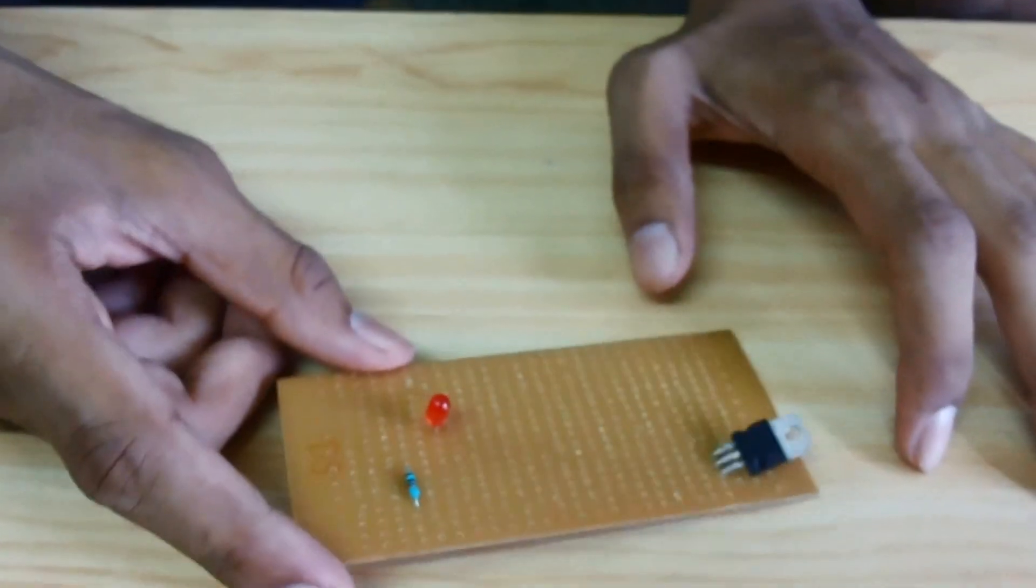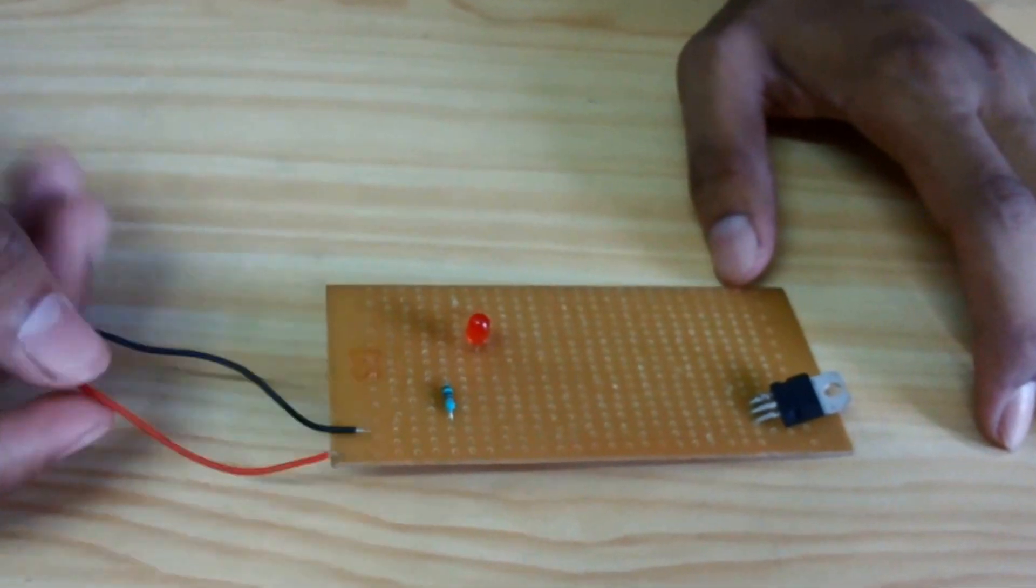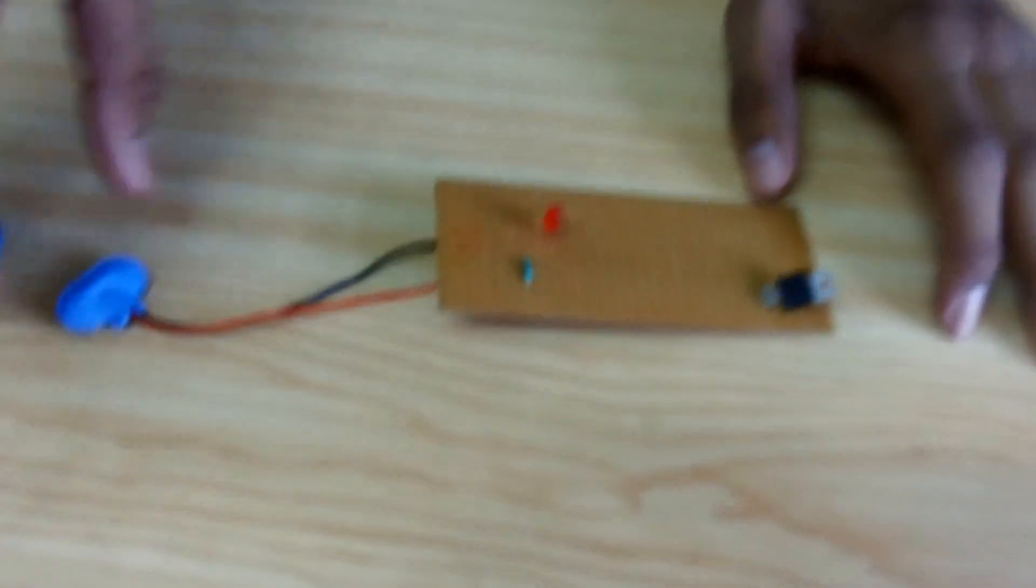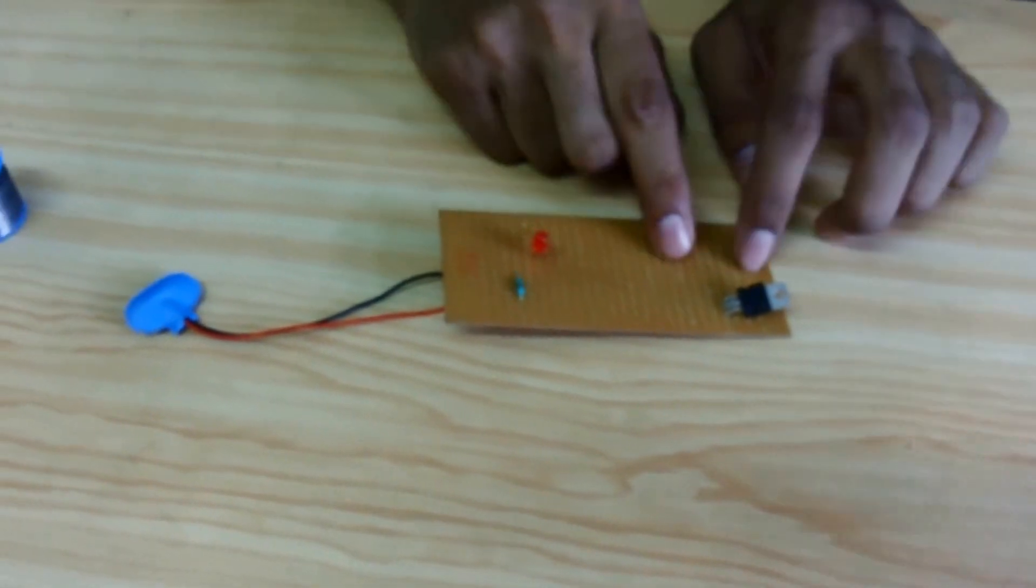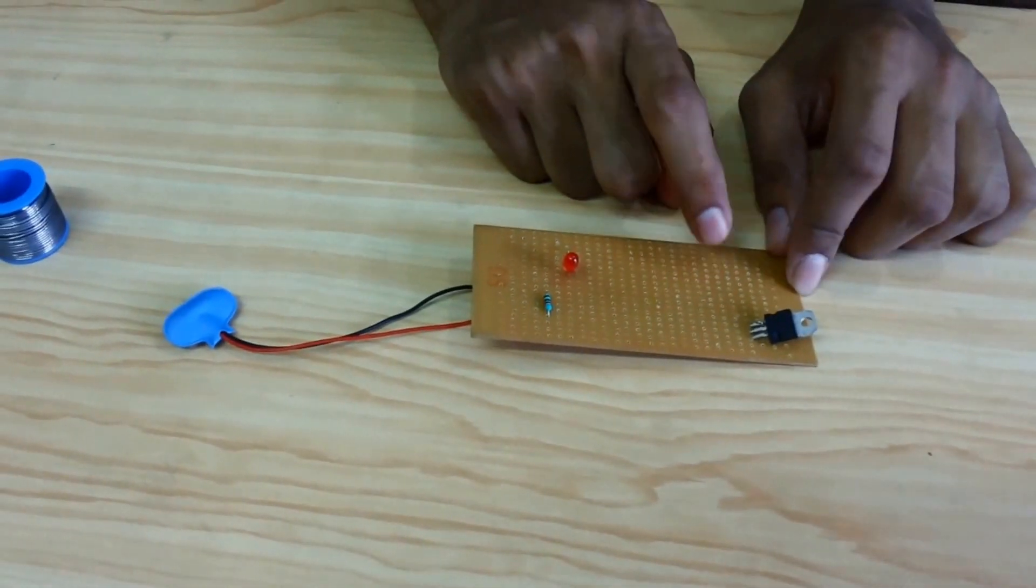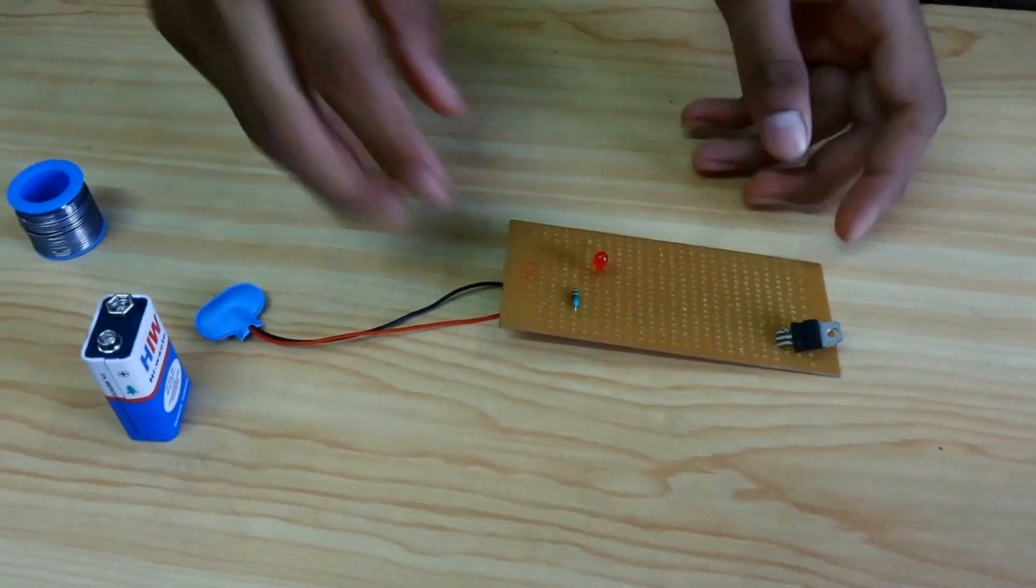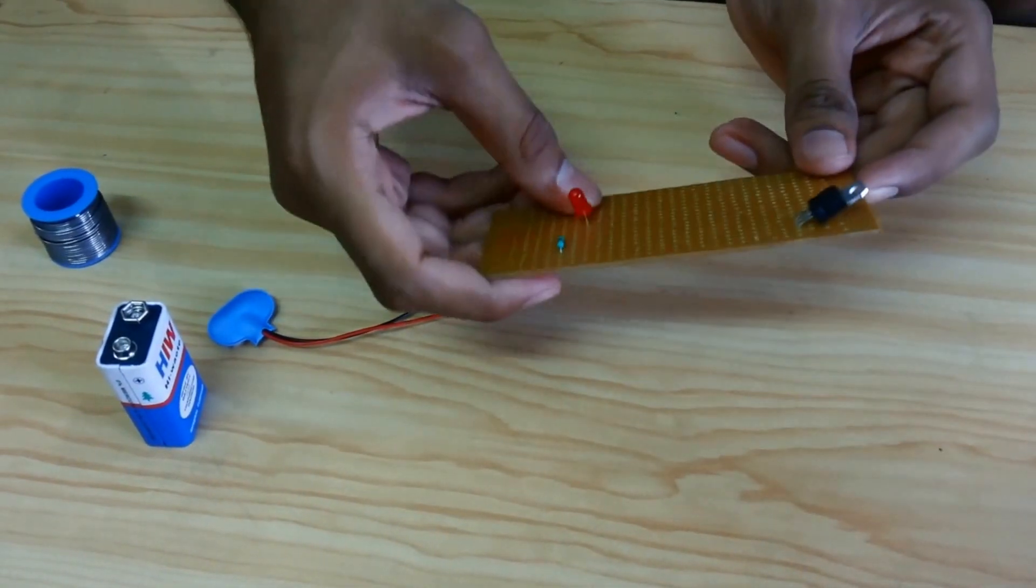So now here will be the supply battery and from there the charger cable. Now let's start soldering.